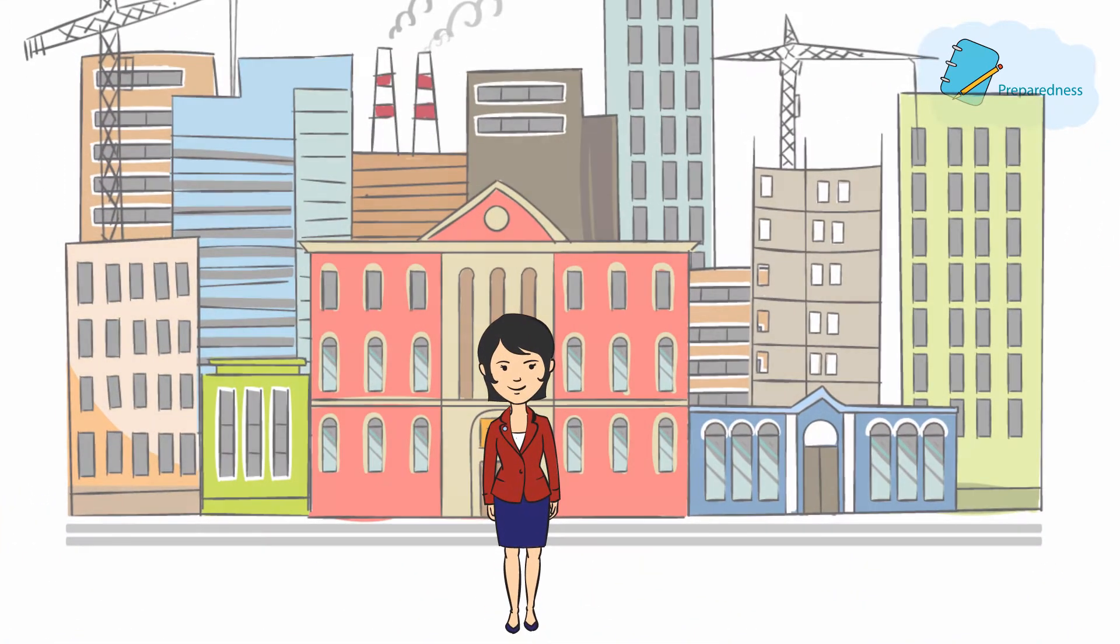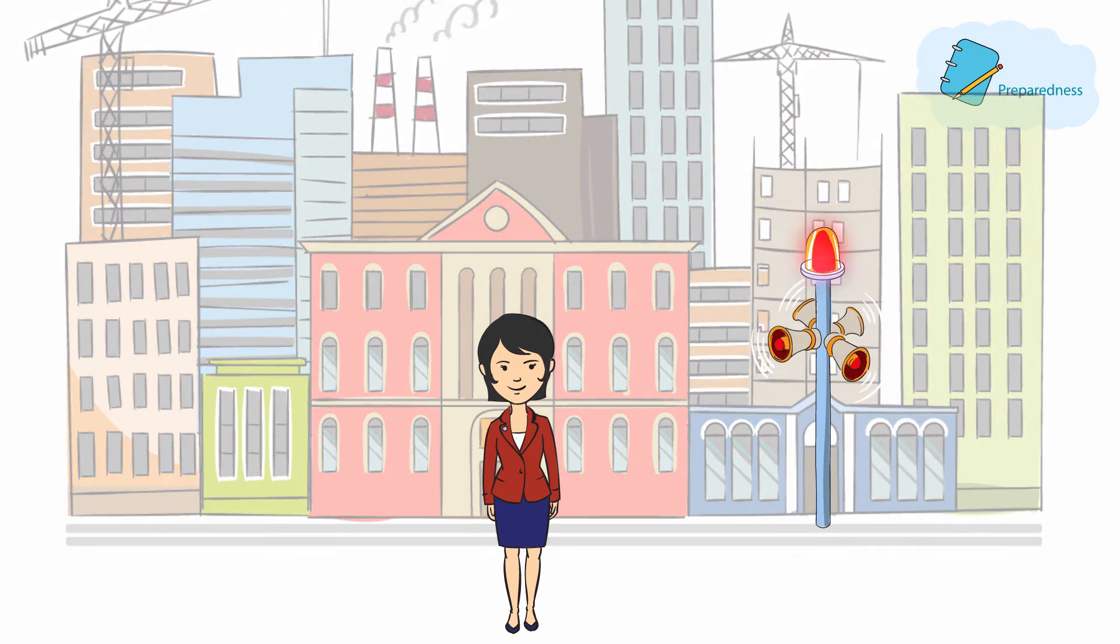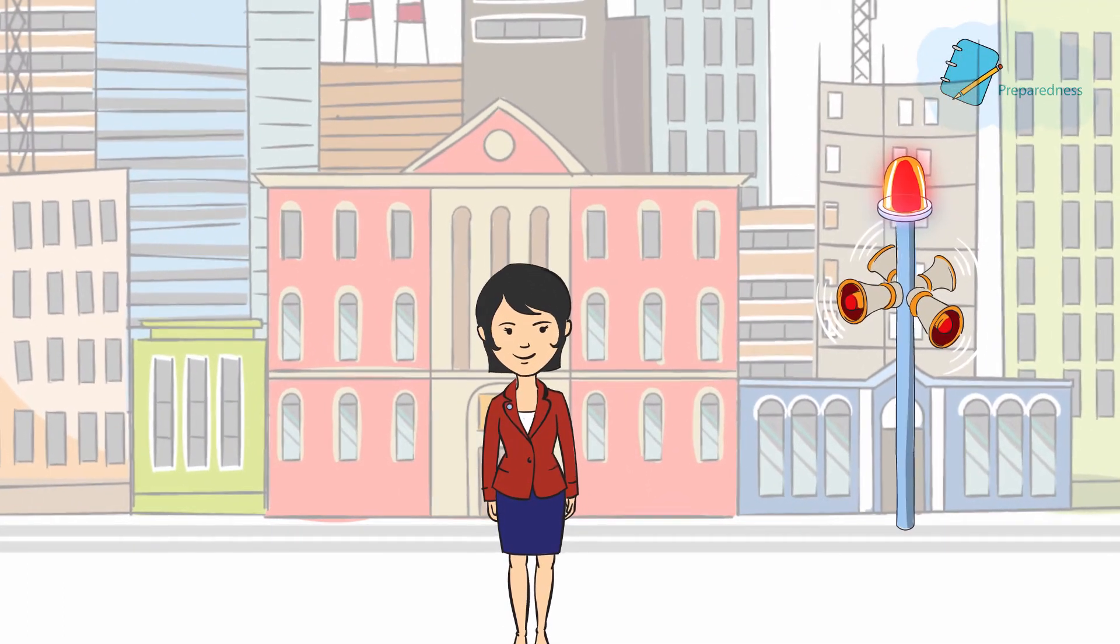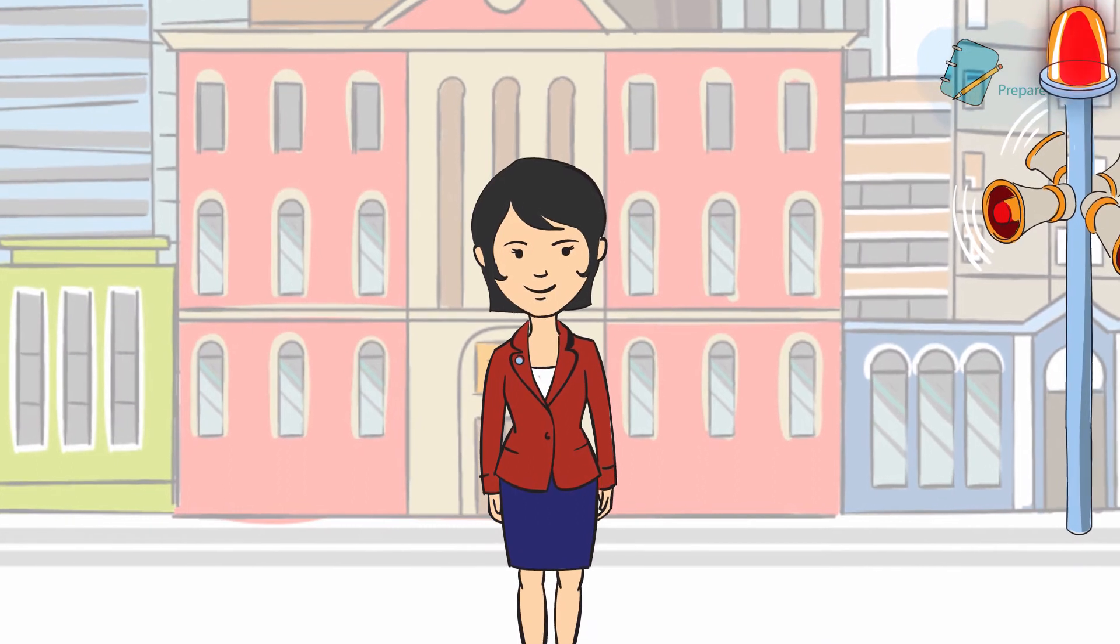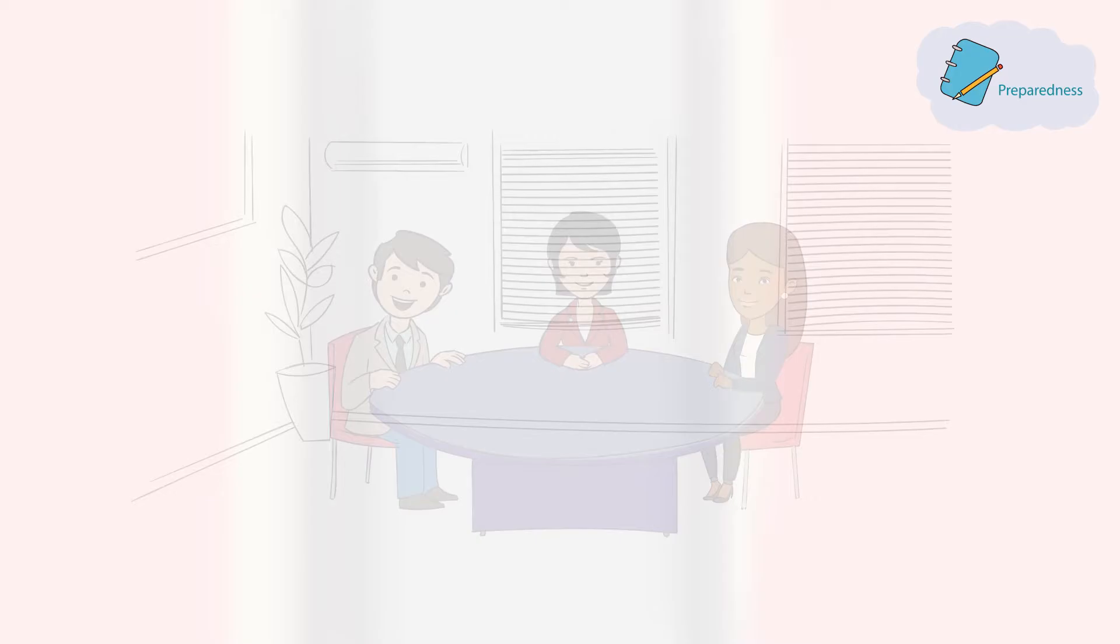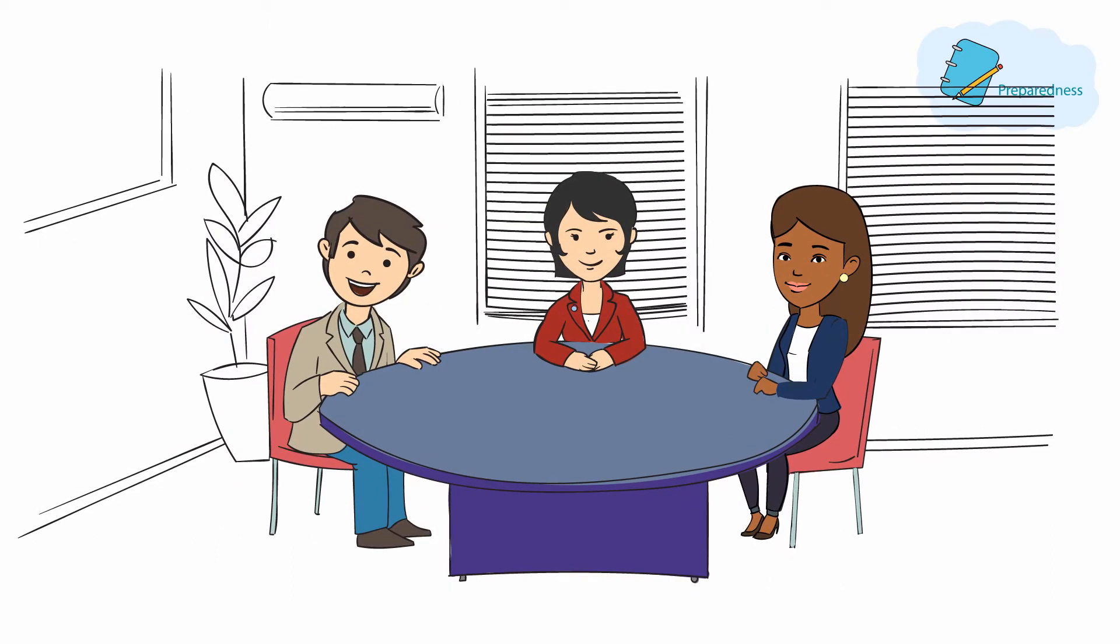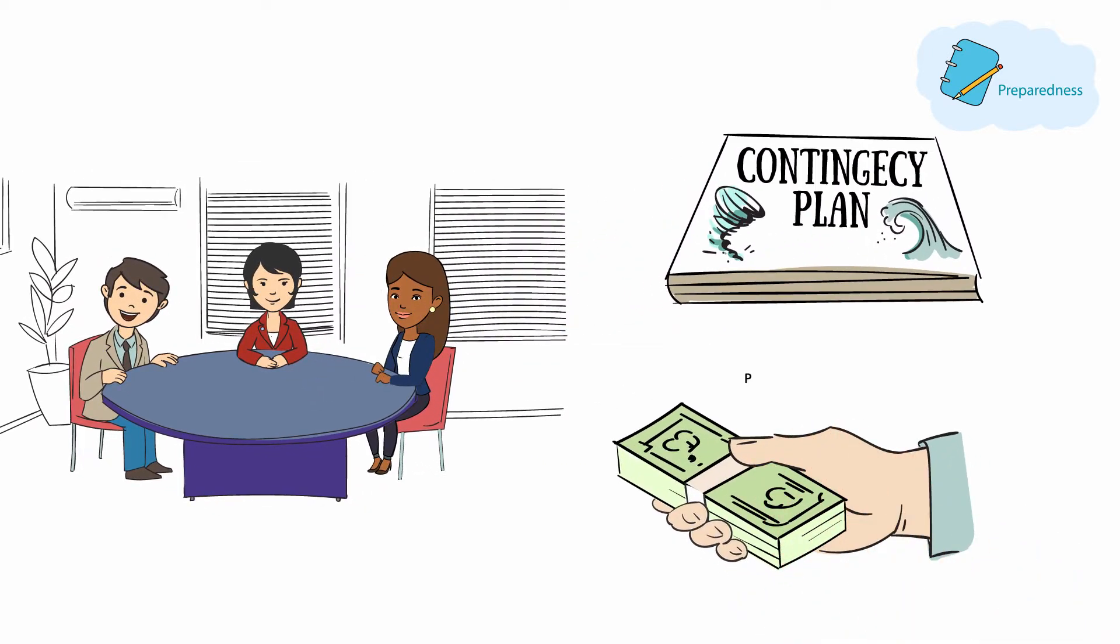As mayor, Emma can invest in an early warning system that can alert people before a heavy rainfall. Furthermore, she can align her city's climate risk management strategy, put in place measures to protect the city's critical infrastructure, and work with relevant agencies to design a contingency plan to respond to a disaster. The contingency plan will require money to be prepared, and this can be obtained through pre-disaster financing.